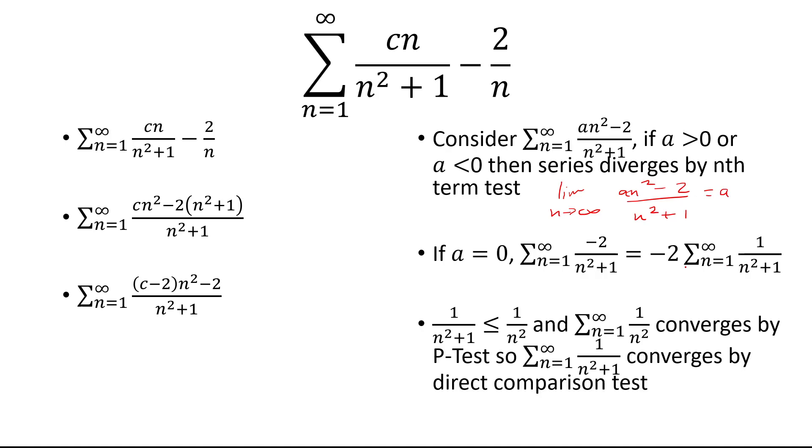We know that 1 over n squared plus 1 is less than or equal to 1 over n squared. Which 1 over n squared converges by the p test. Therefore, the sum from n equals 1 to infinity of 1 over n squared plus 1 also converges by the direct comparison test. So if something bigger converges, then something smaller will also converge.